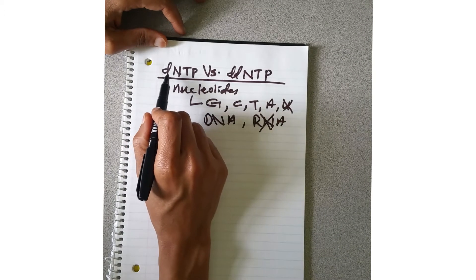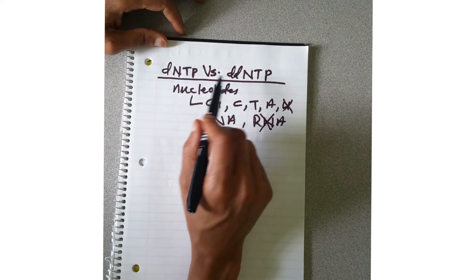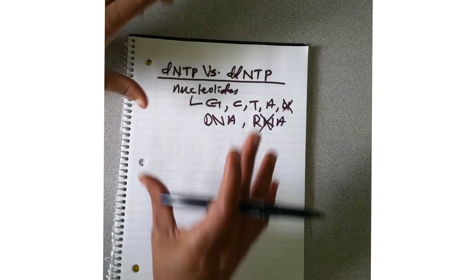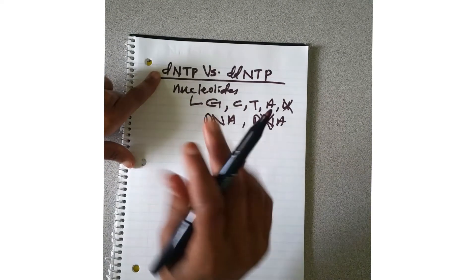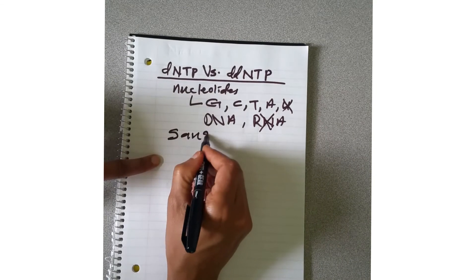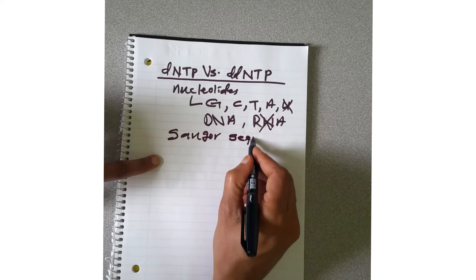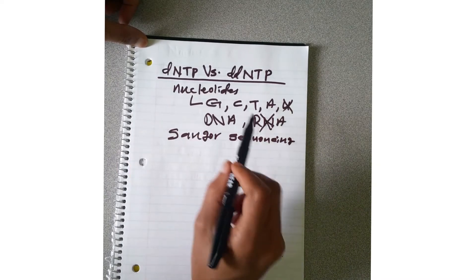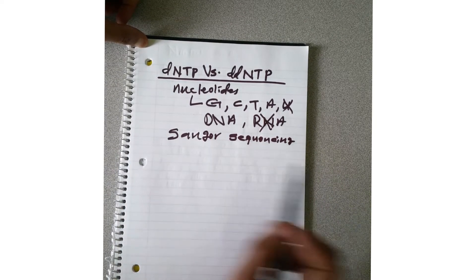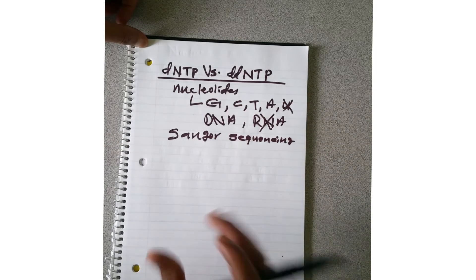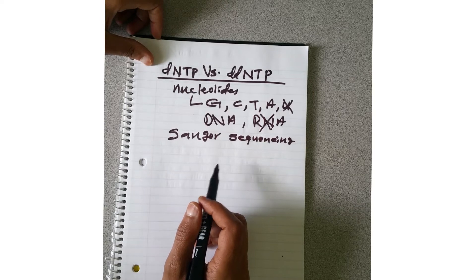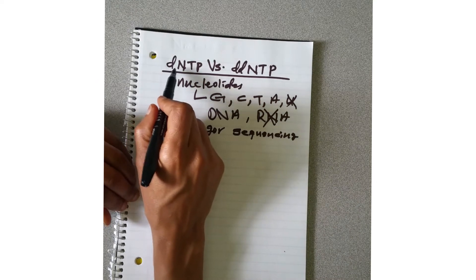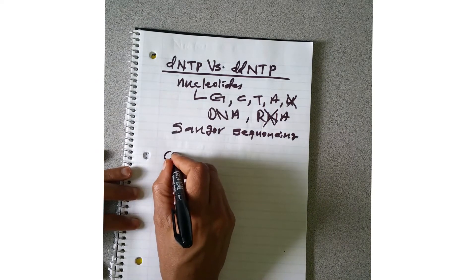Nucleotides are divided into dNTP and ddNTP — deoxyribonucleotide triphosphate and dideoxynucleotide triphosphate. If we understand this, we can understand Sanger sequencing. The reason we are covering this is to understand the Sanger sequencing method, so before we dive into that topic I want to talk about what these are.